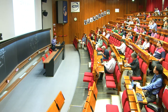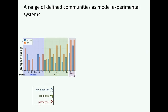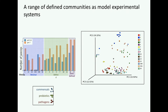We have done this on a much larger scale. We start with three different bacterial mixtures — either excluding probiotics or pathogens, or mixing all together — across 15 different defined growth media and two different pHs (7 and 5.5, with 5.5 closer to what you'd expect right after the contents come out from the stomach). We do nine transfers, knowing that three transfers are sufficient, and do barcode sequencing at the end. We get a range of defined communities, from as few as four or five bacteria up to 20, and these assemblies are media-dependent.